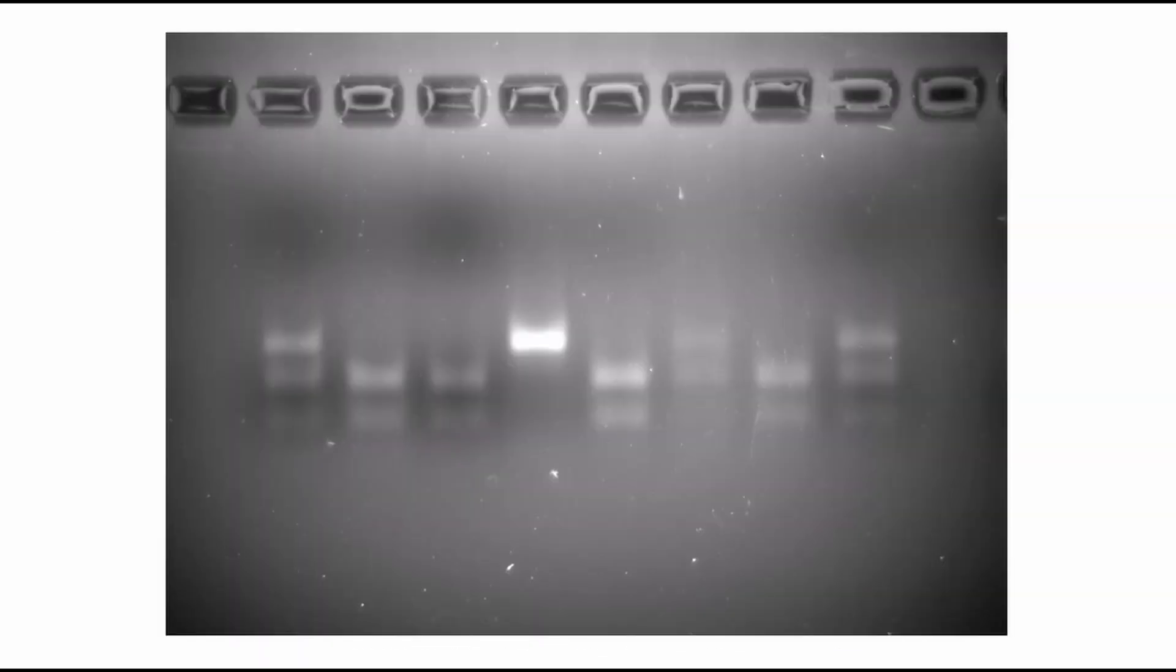Marker-assisted selection makes it possible to determine whether individuals are heterozygous or homozygous. With CAPS markers, heterozygous individuals have fragments of all three sizes: 300, 200, and 100 base pairs.